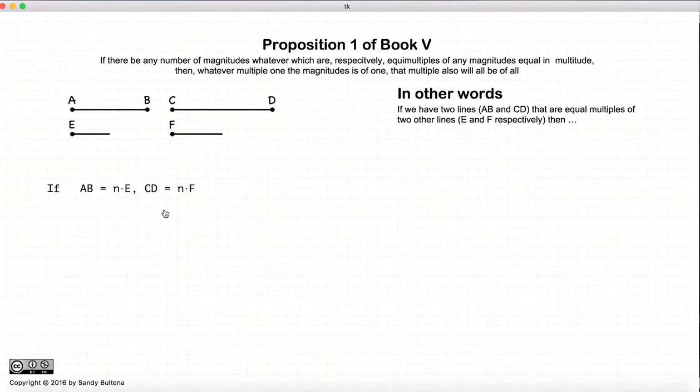So this proposition states that if I have AB and CD being an equal multiple of E and F. Now what does that mean when I say equal multiple?